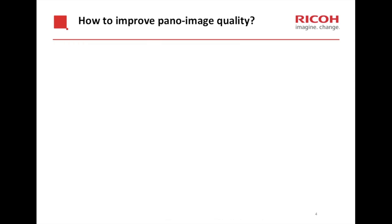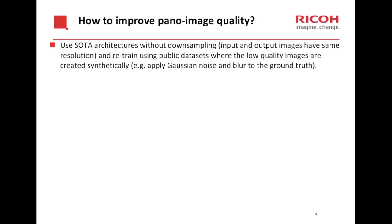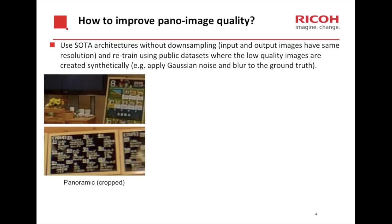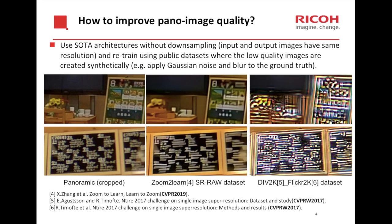How about using state-of-the-art architectures without down-sampling the ground truth, so that the input and output have the same resolution? We retrain using public datasets where the low-quality images are created synthetically by applying Gaussian noise and blur to the ground truth. Looking at the results, a panoramic original image of low quality trained using public datasets such as DIV2K, Flickr2K, and ZOOM2Learn's SR-RAW dataset did not generate good results either.